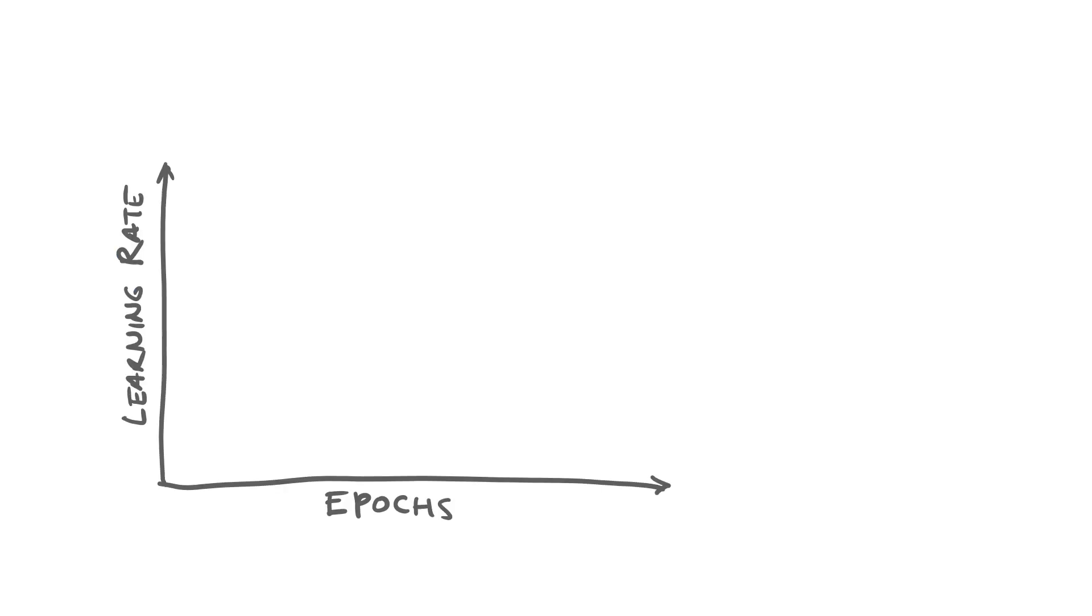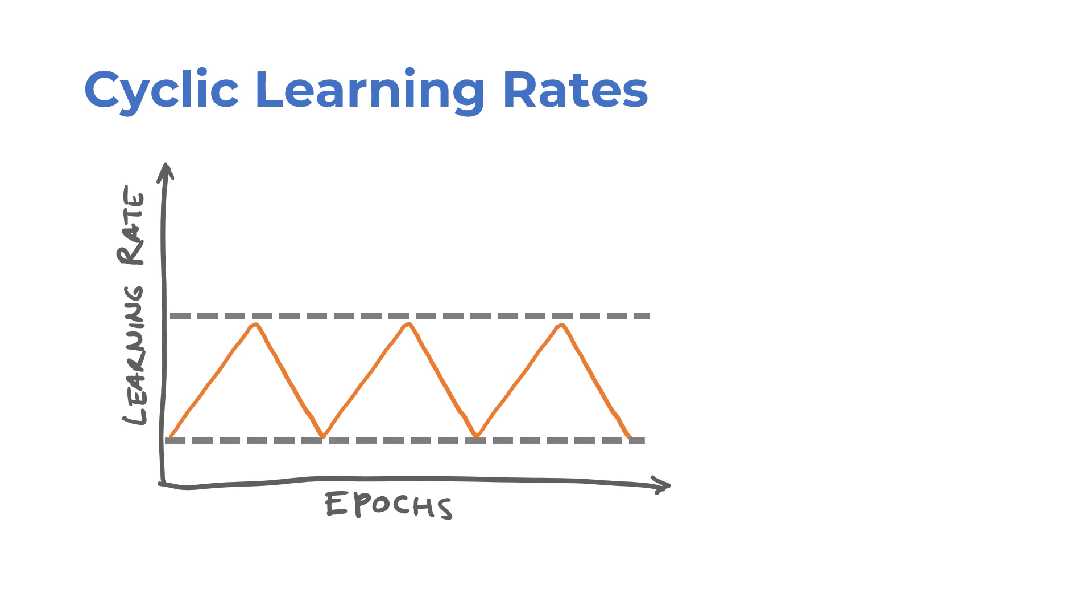Speaking of learning rates, let's talk about some learning rate schedules that might help speed up training. One of them is a cyclic learning rate schedule that increases and decreases the learning rate in a cycle within some upper and lower bounds. The upper bound can be reduced as the training progresses.